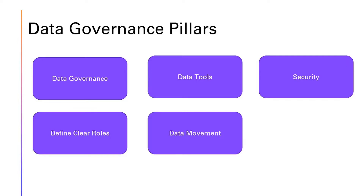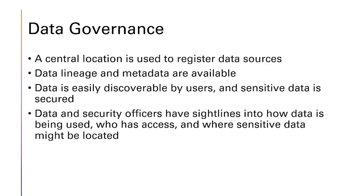What are the data governance pillars? They include data governance itself, defining clear roles, data tools, data movement, and security. Data governance means a central location is used to register data sources, data lineage and metadata are available, data is easily discoverable by users, and sensitive data is secured. Data and security officers have sightlines into how data is being used, who has access, and where sensitive data might be located.